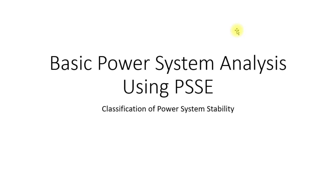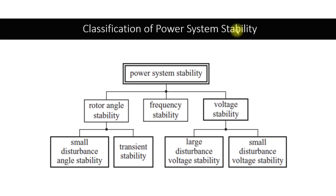Based on the disturbance, we can divide our system stability into three types. One type is rotor angle stability, which is also known as transient stability. Another type is frequency stability, and the third type is voltage stability.